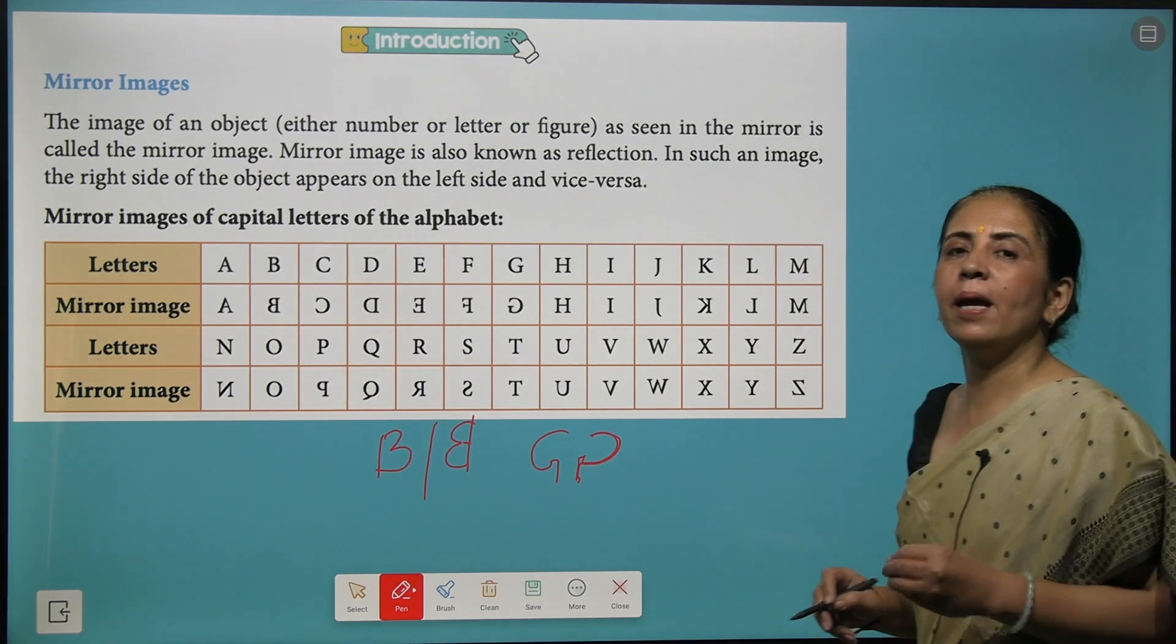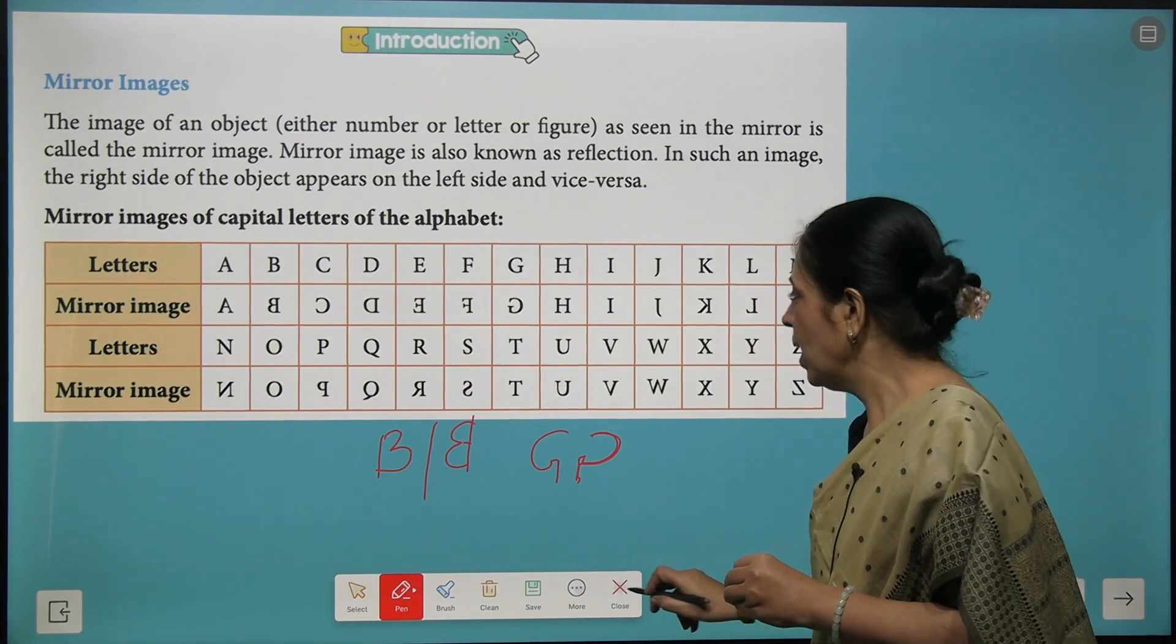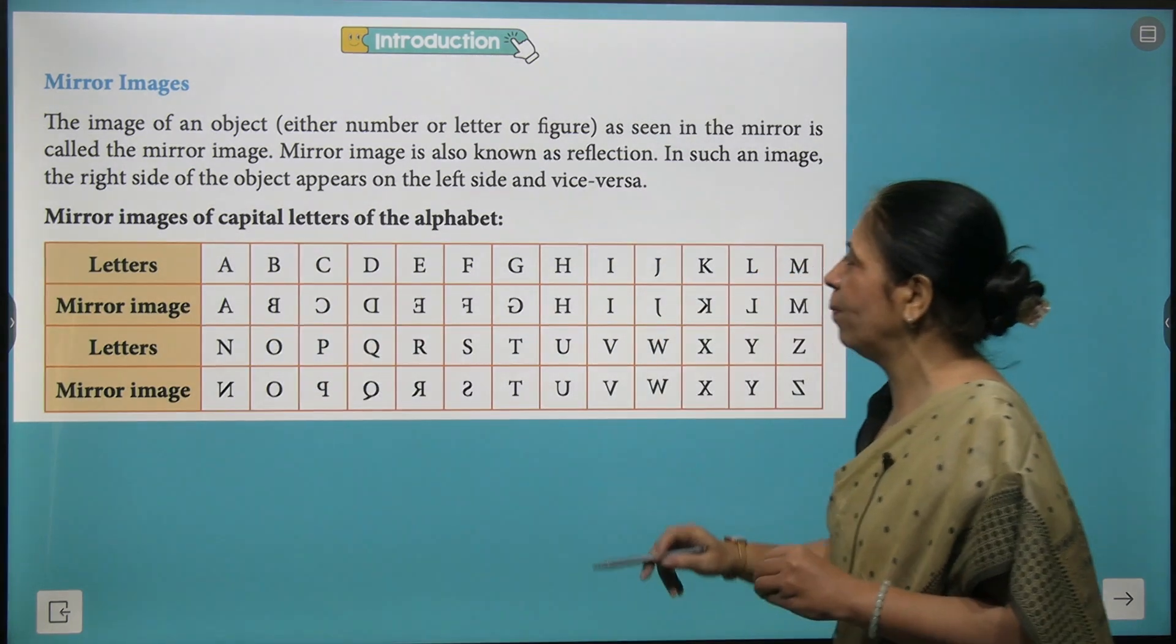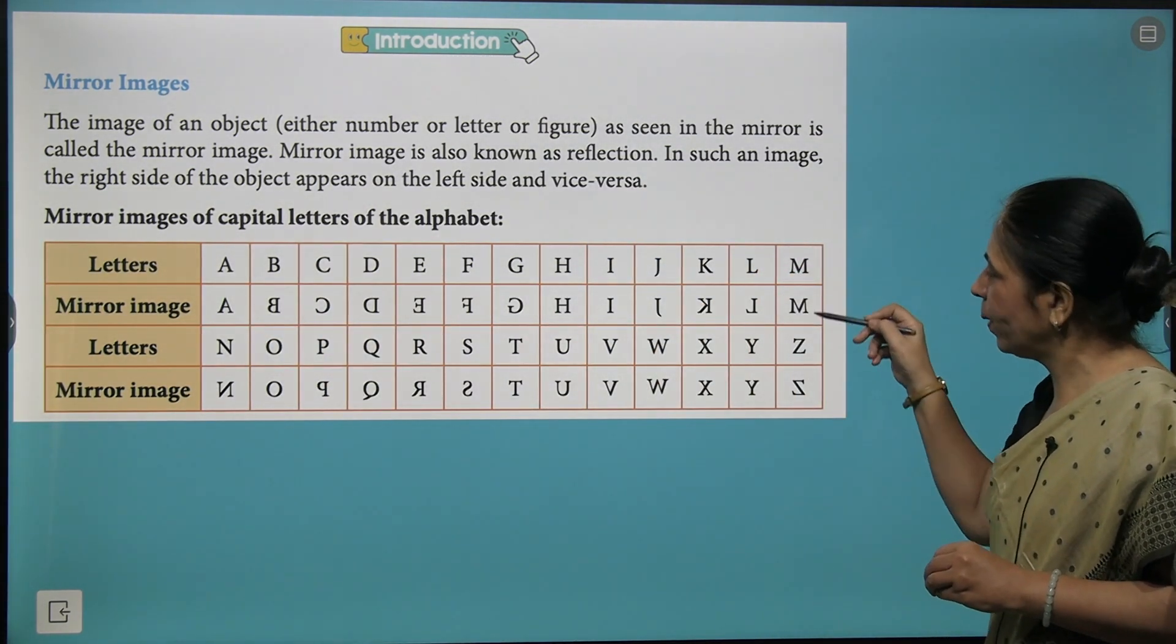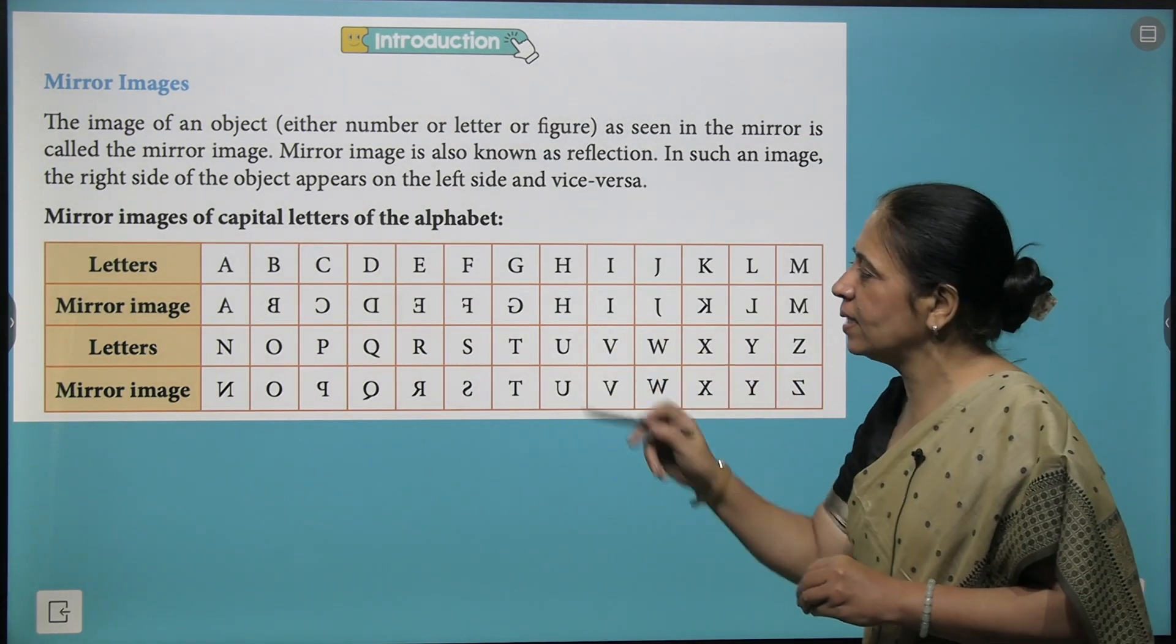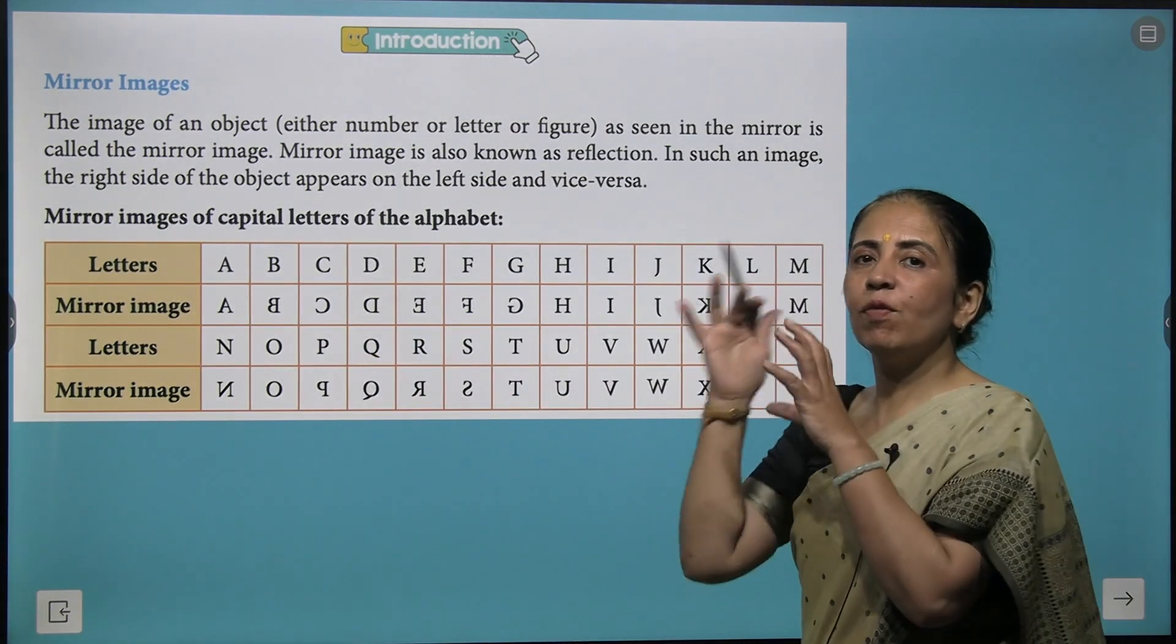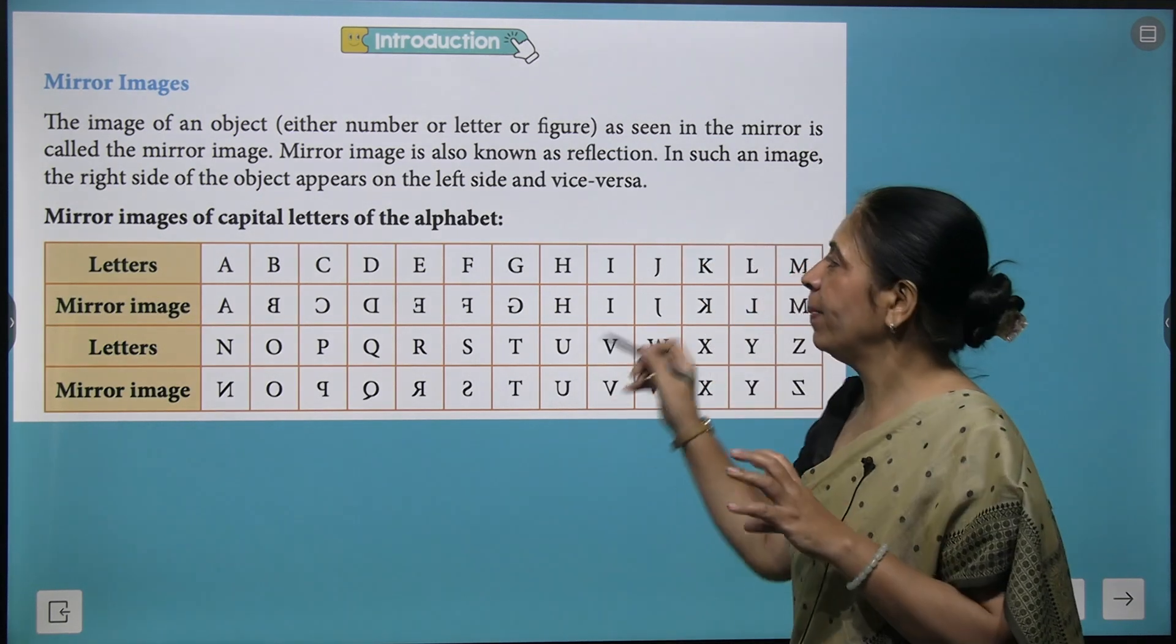So we say it is always laterally inverted image and some of the alphabets exactly look same like alphabet A, alphabet H, I they are looking same. You could see we have M, W is there, V is there, U is there, T is there. So if you just keep in mind we have O also like that, which of the alphabets exactly looks similar when you have the mirror images.